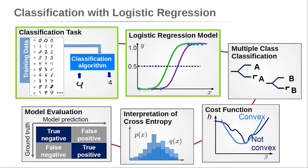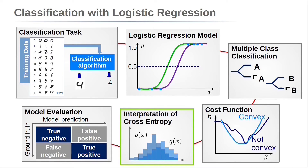The previous lecture gave an introduction to the linear regression model. Here we will modify this linear regression model to the logistic regression model to perform the classification task. Then, the logistic regression model is generalized to softmax regression to perform multiple class classification tasks. The mean squared error cost function is replaced by cross entropy, and we will learn why. Finally, it is shown how to evaluate classification models.